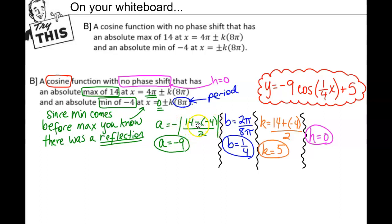To know whether it's positive or negative 9, we look at which comes first in the graph. The min starts at 0, the max isn't until 4π. Since the min comes before the max for a cosine graph with no phase shift, there's a reflection, so a = -9.